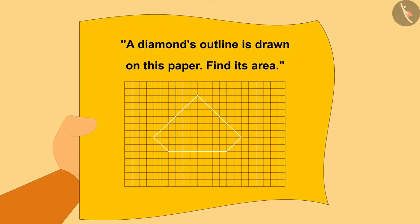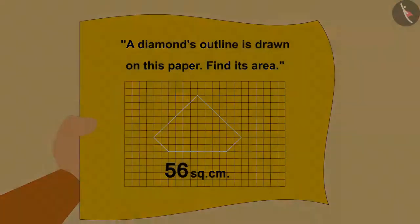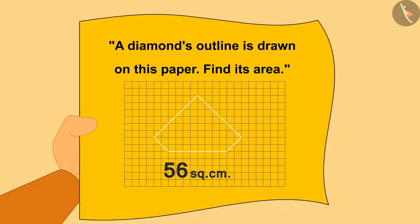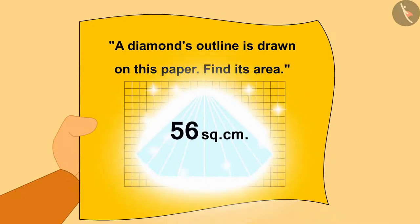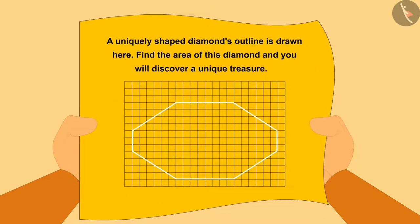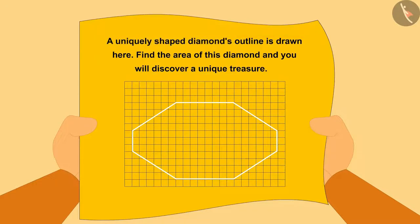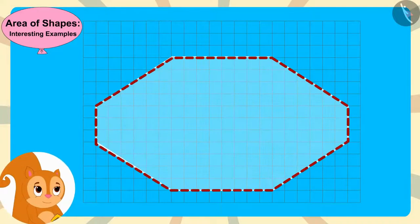Chanda immediately wrote the area of the diamond as 56 square centimeters on that paper. As soon as she wrote it, a diamond of 56 square centimeters appeared in front of her — Chanda could not believe her eyes. Then a new puzzle appeared on paper: a uniquely shaped diamond's outline is drawn here; find the area of this diamond and you will discover a unique treasure. Chanda read the message and started looking for the answer.